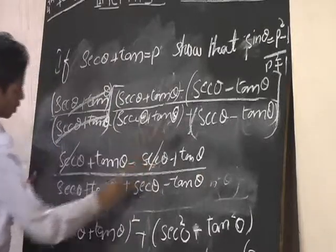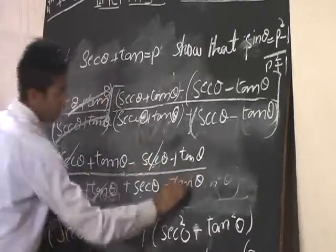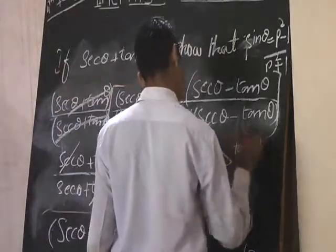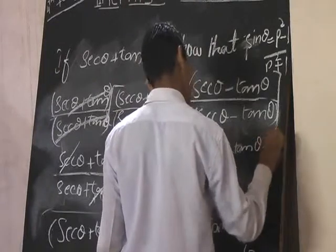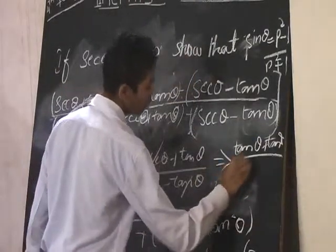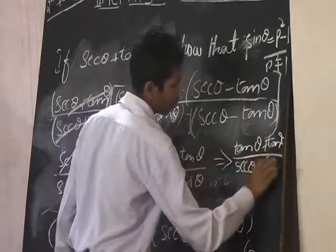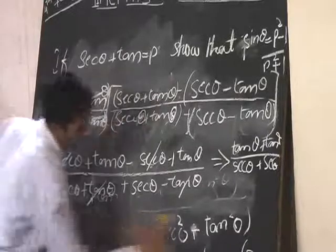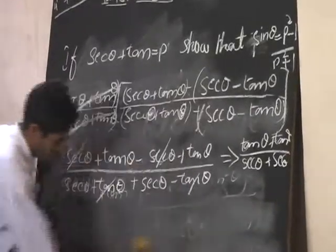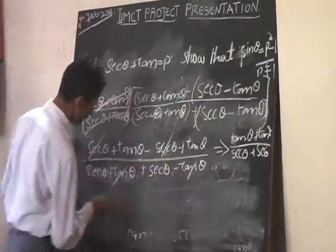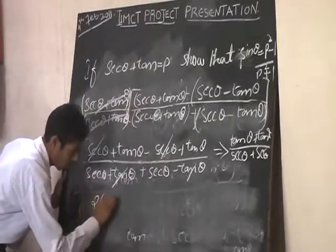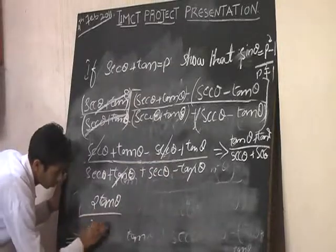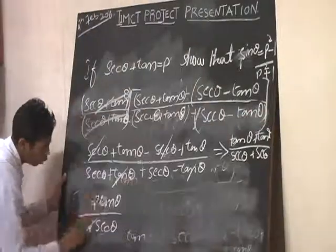Plus sec theta minus sec theta gets cancelled. Plus tan theta minus tan theta gets cancelled. The remaining is tan theta plus tan theta. Divided by, the remaining in denominator is sec theta plus sec theta. Tan theta plus tan theta is two tan theta. Denominator, sec theta plus sec theta is two sec theta. Two gets cancelled.